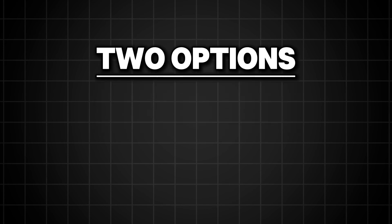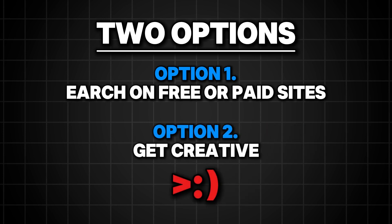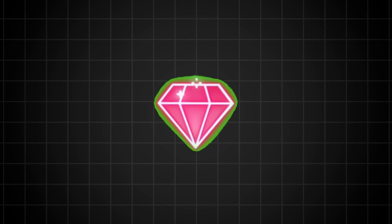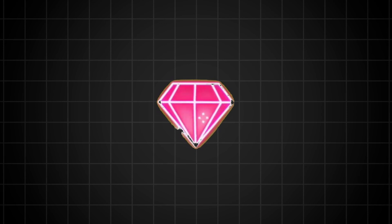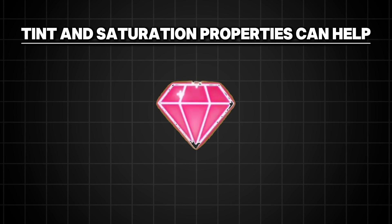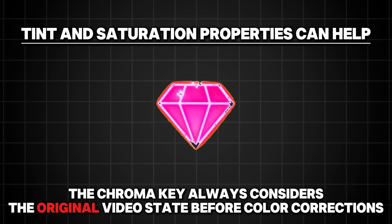There are two options: either I continue to search on free or paid sites, or I get a little more creative and transform this animation. First, I remove the green background using the chroma key. As you can see, it didn't do a nice job around the diamond. I can increase the intensity, but if I overdo it, some parts of the diamond will disappear. The tint and saturation properties can help with this — if I simply increase the values, the animation is much more vivid, but the end result is the same. The reason is that the chroma key always considers the original video state before color corrections.